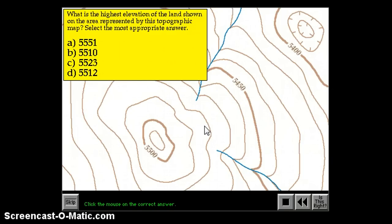5460, 70, 80, 90, 5500. So this would be 5510. And inside of this loop, because it doesn't have hachure marks, it could be something a little bit higher. So 5510 is the contour. The highest possible point inside of there would be 5519.